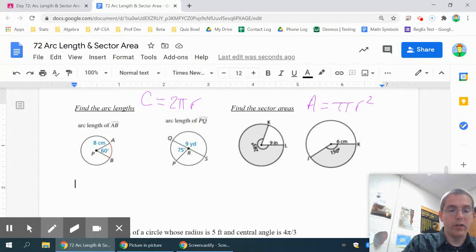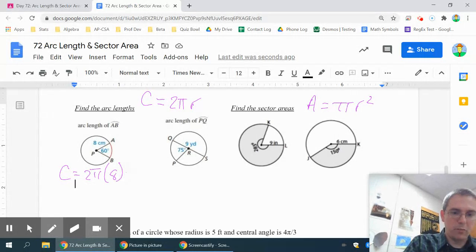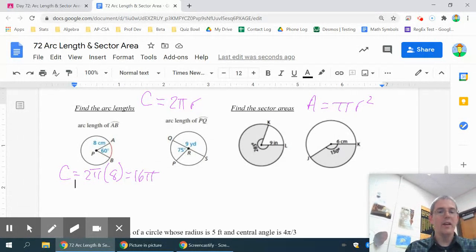But here we're looking for the entire arc length. So on this first one, start by finding the circumference. The circumference is 2πr. In this case, r is 8. So my circumference is 16π. I just do 2 times 8 is 16. And leave the π on your paper because we want answers in terms of π.